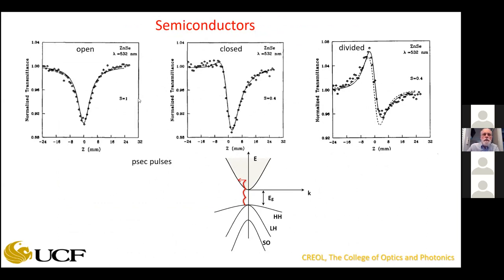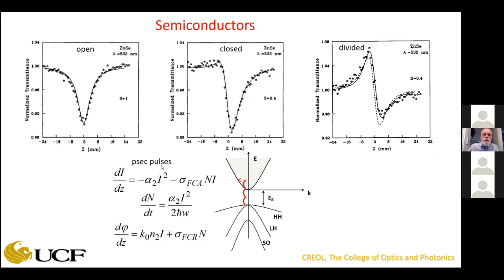Here are some z-scans — open aperture, closed aperture, divided — where what's happening is that N₂ was very small, dominated by defocusing from photogenerated free carriers. The fits use all those equations, which you cannot solve analytically: you've got the I-squared term and linear absorption. This is actually chi-3 (imaginary part) for two-photon absorption, followed by chi-1 for linear and free-carrier effects — not simply chi-3.